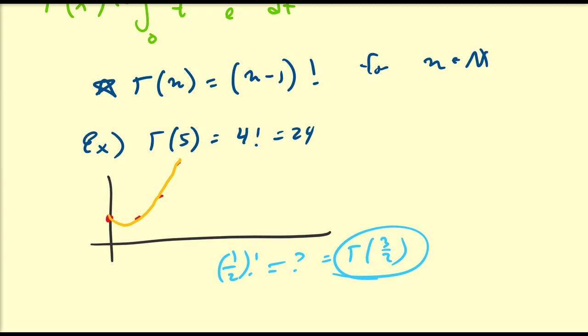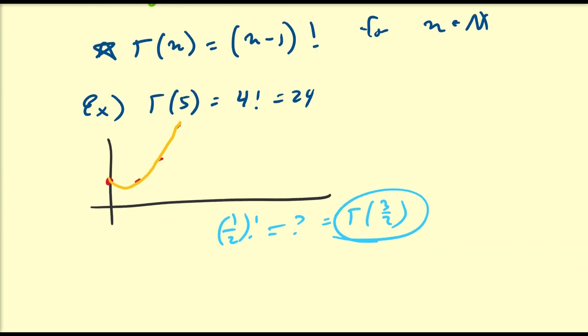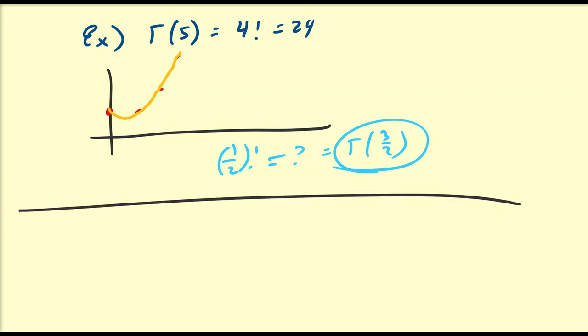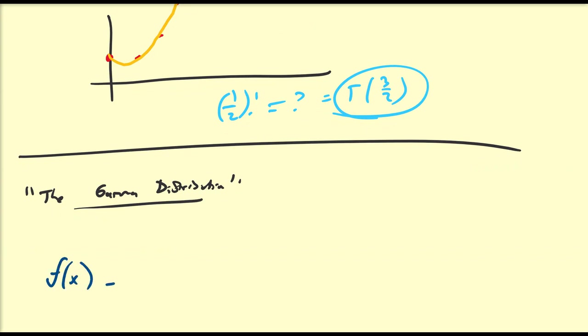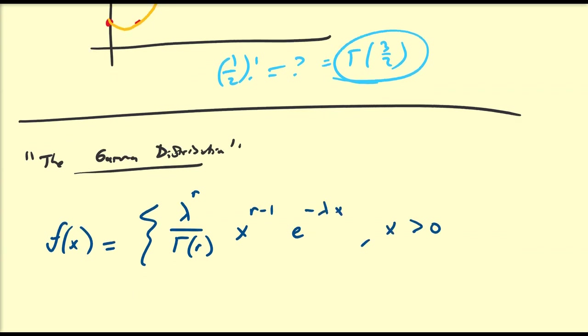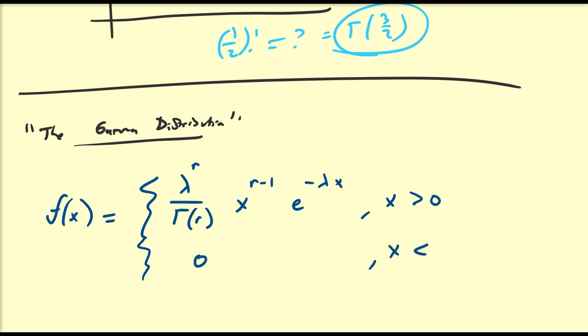Desmos will calculate this perfectly fine. Now, the gamma distribution has the following PDF: f of x equals lambda to the power of r, divided by gamma of r, times x to the power r minus 1, times e to the minus lambda x. This holds for x greater than 0, and is defined to be 0 for x less than or equal to 0.